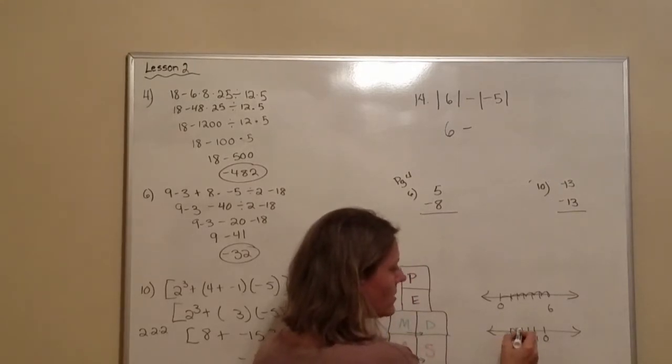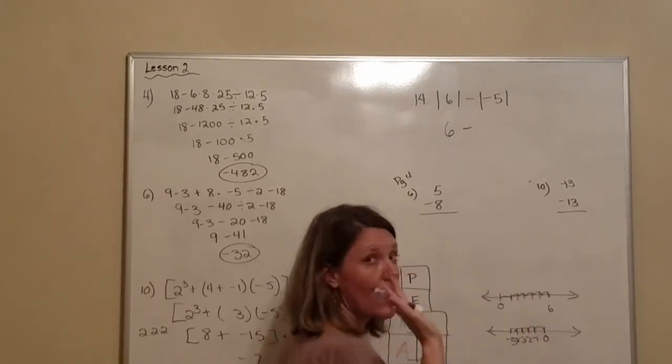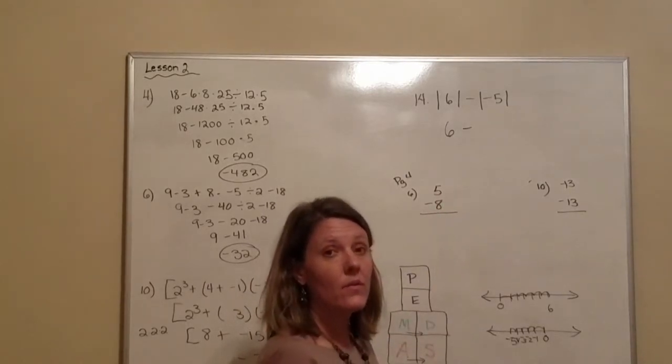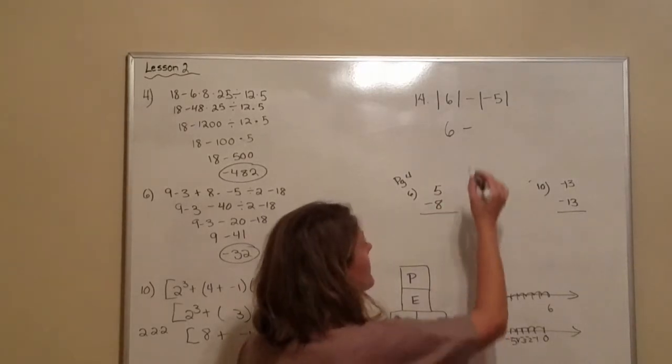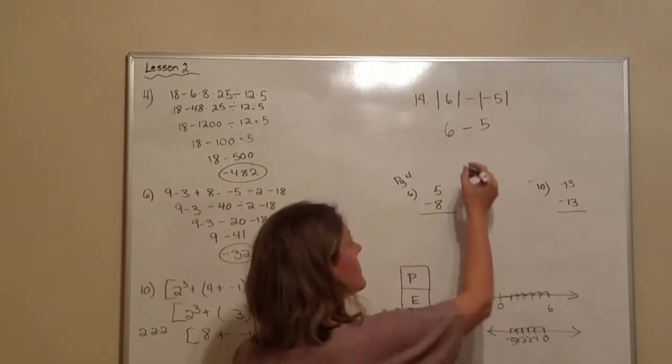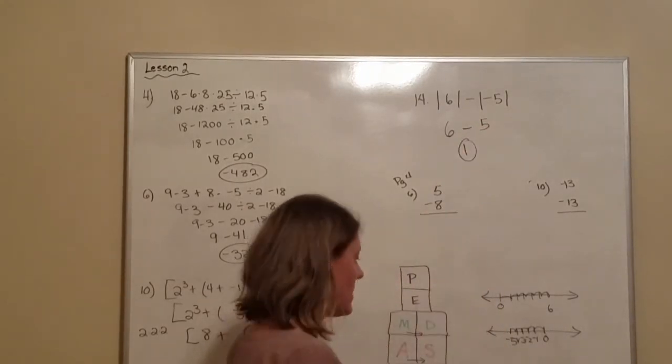So, negative 5 is 1, 2, 3, 4, 5 units away. So the absolute value of negative 5 is 5. And 6 minus 5 is 1. So, the answer for 14 is 1.